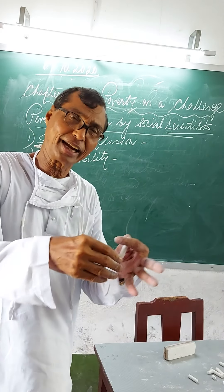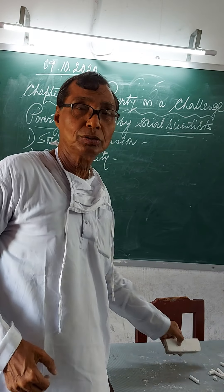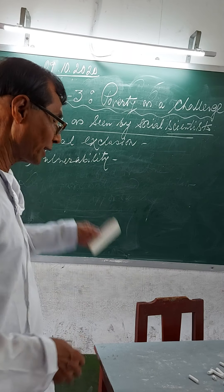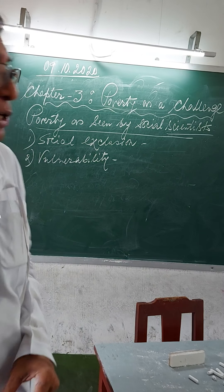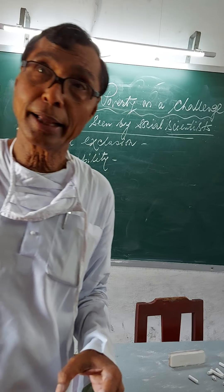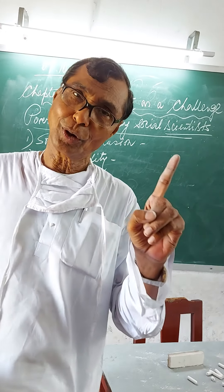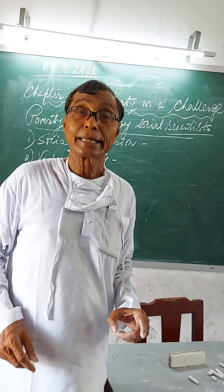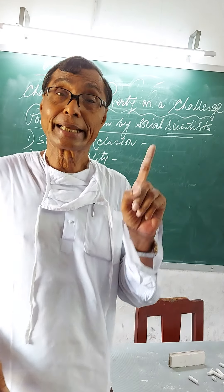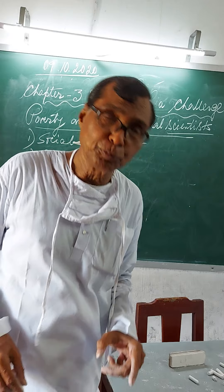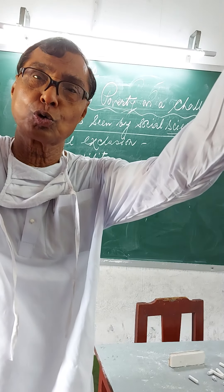This is what is known as social exclusion. Now the second point: vulnerability. Vulnerability means greater probability of becoming poor and remaining poor for many years to come.